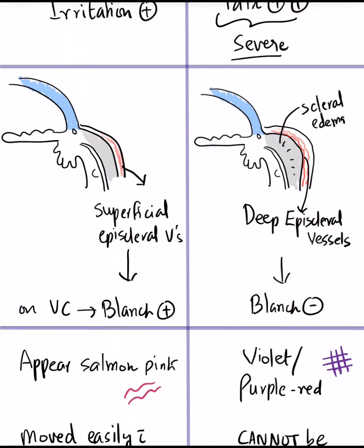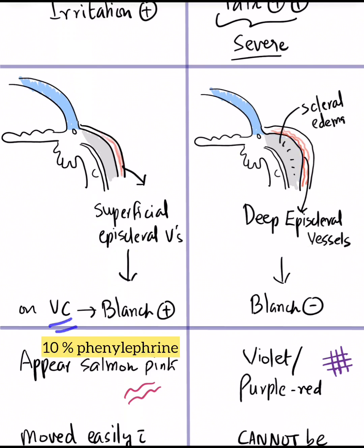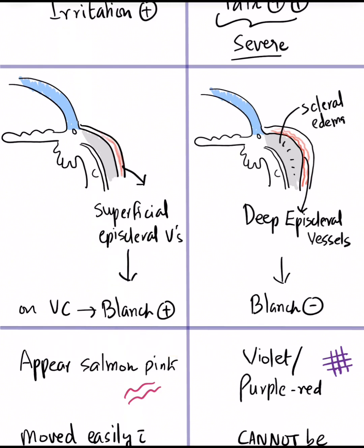In episcleritis, there is going to be involvement of the superficial episcleral vessels. On the contrary, in scleritis, you will have scleral edema and involvement of the deep episcleral vessels. That's why when we put a vasoconstrictor, the superficial episcleral vessels will blanch, but in scleritis, the vessels will not blanch.